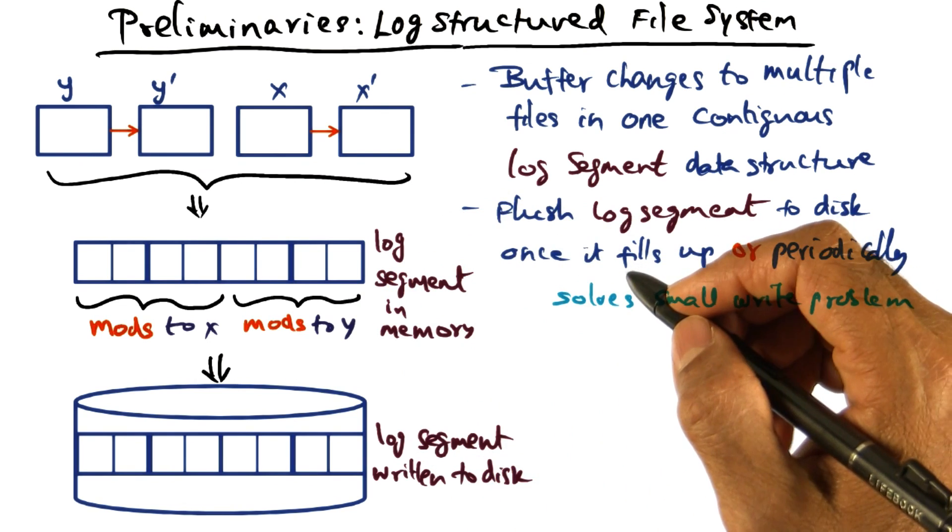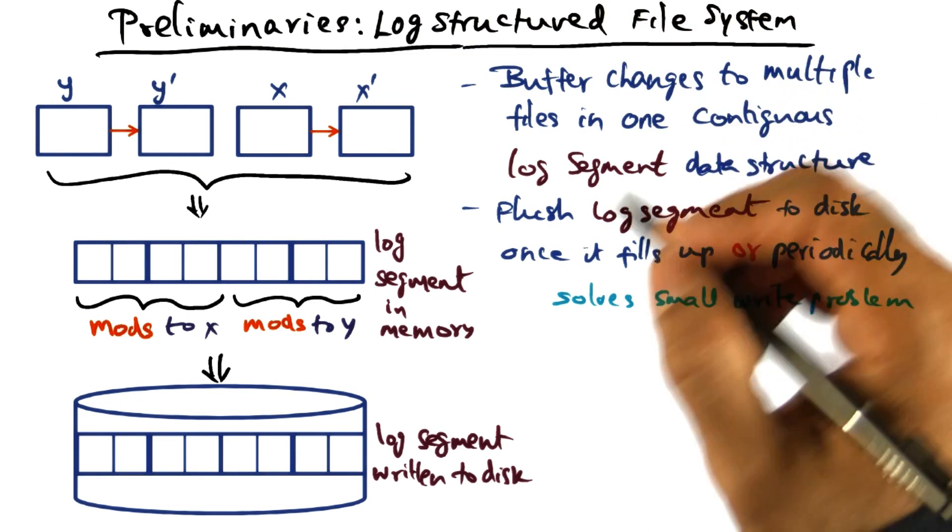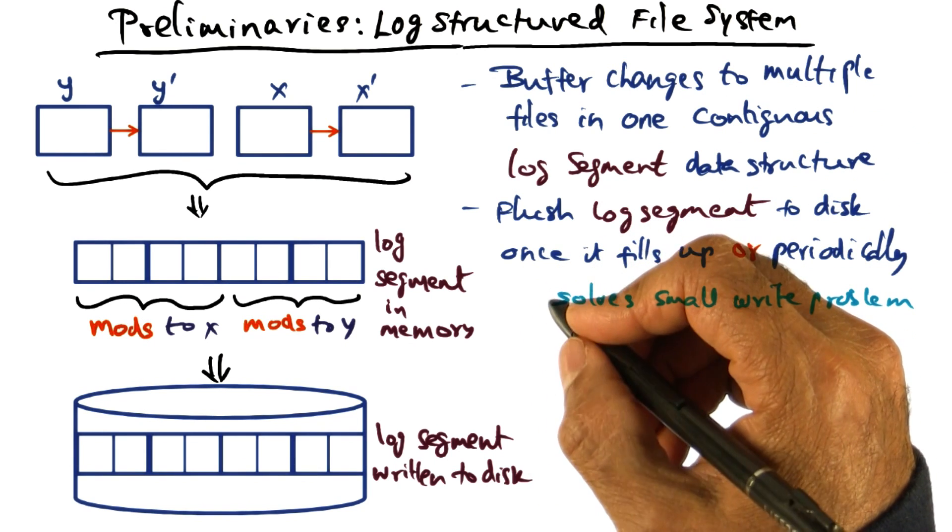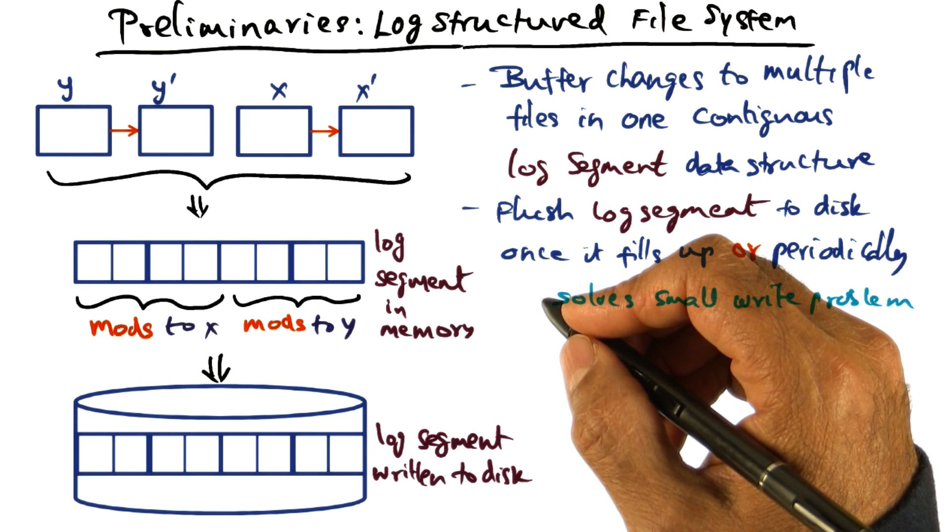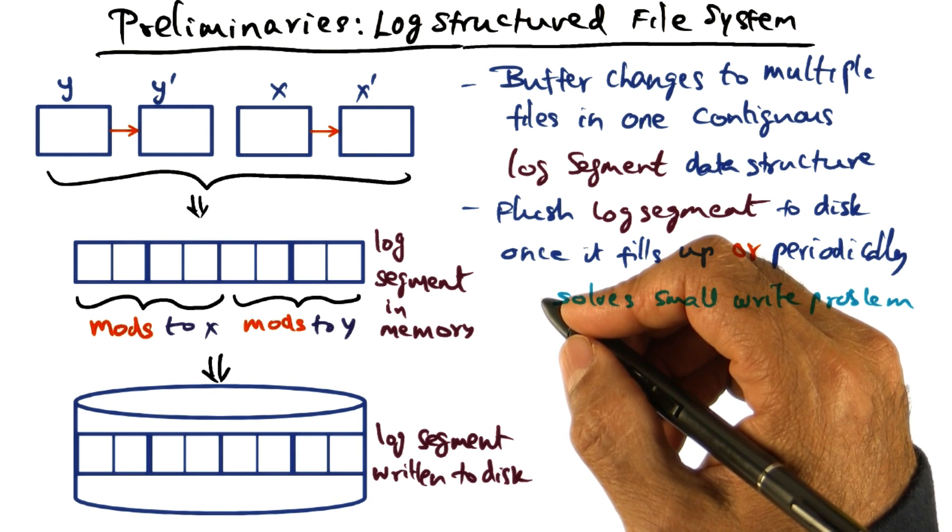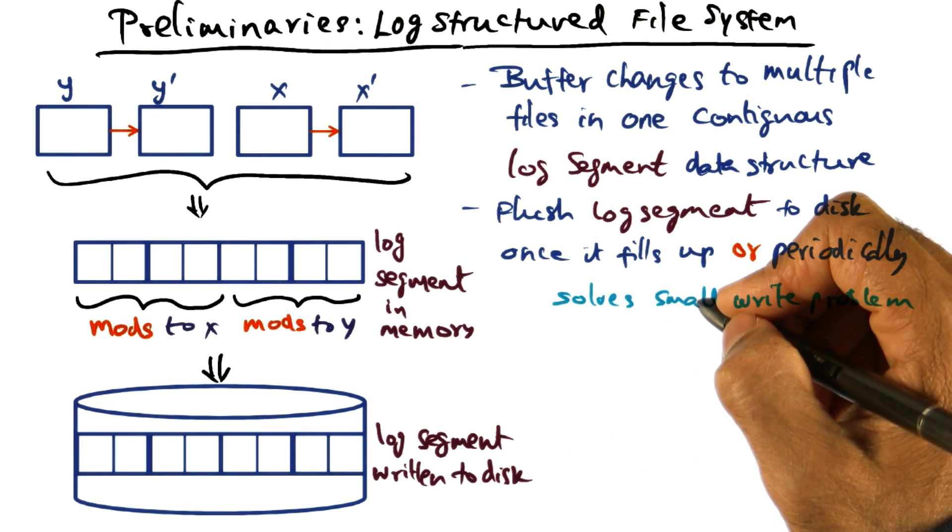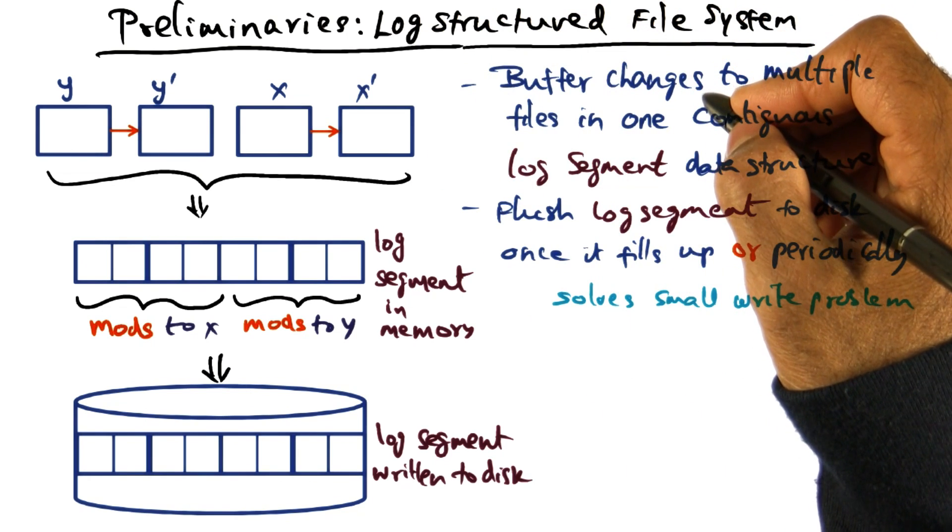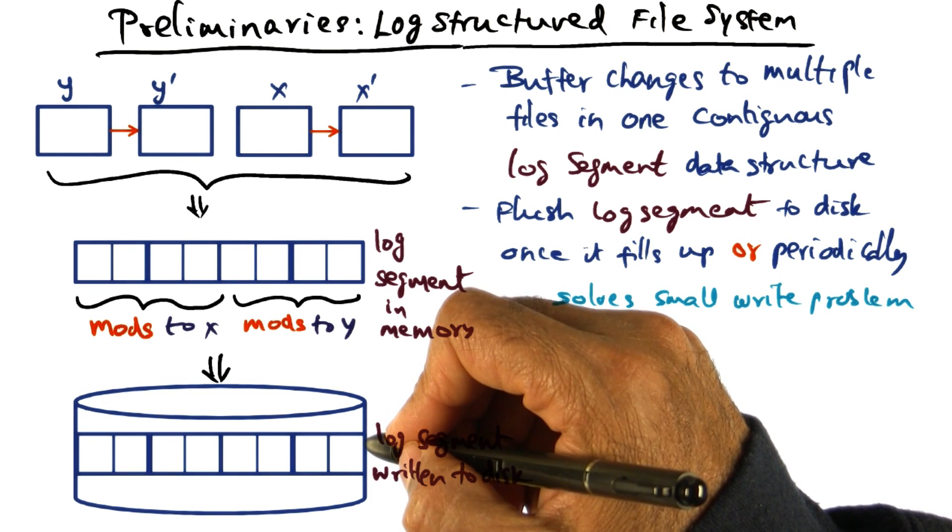You may have also heard the term journaling file system. There's a difference between log-structured file system and journaling file system. Journaling file systems has both log files as well as data files. And what journaling file system does is it applies the log files to the data files and discards the log files. The goal is similar in a journaling file system, and the goal is to solve the small write problem. But in a journaling file system, the logs are there only for a short duration of time before the logs are committed to the data files themselves. Whereas in a log-structured file system, you don't have data files at all. All that you have are log files, and reads have to reconstruct the data from the log files.